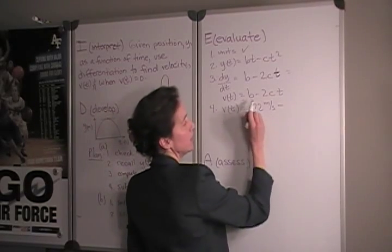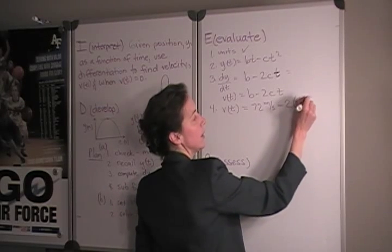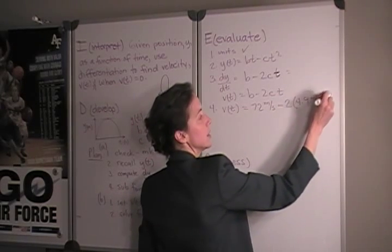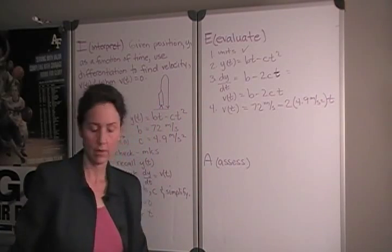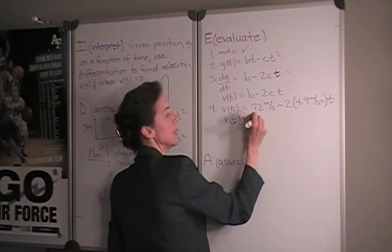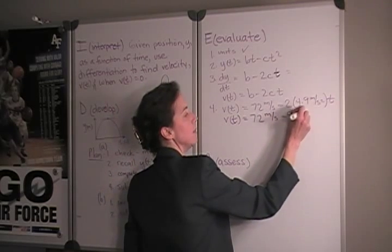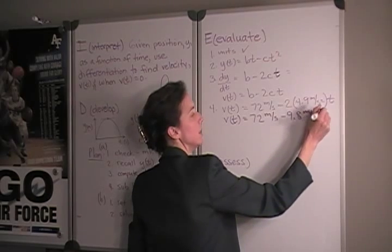So, we have 72 meters per second minus 2 times 4.9 meters per second squared times time. We can simplify that a little bit to 72 meters per second minus 9.8 meters per second squared times time.